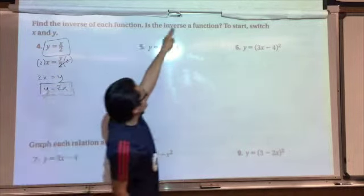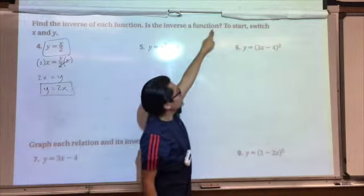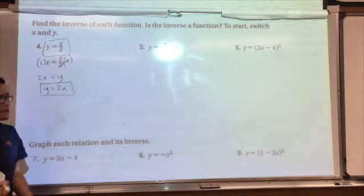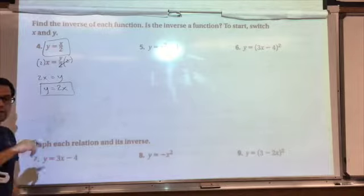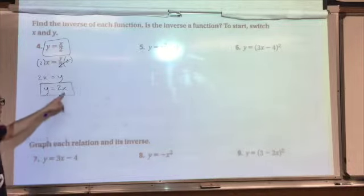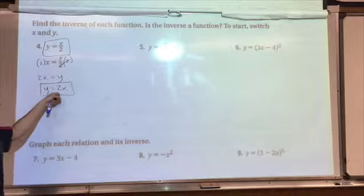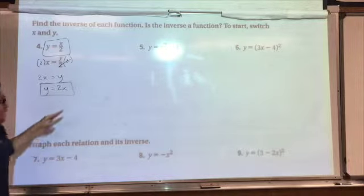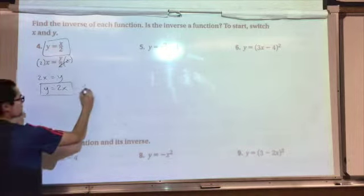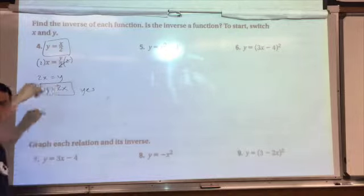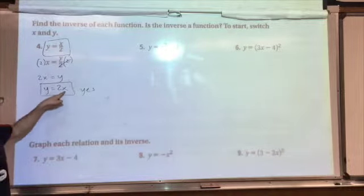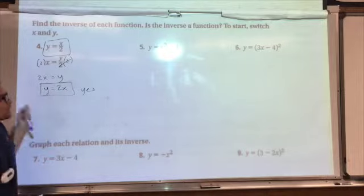The question at the end is: is the inverse a function? Think back to the vertical line test, or think back to the rule that each input must have exactly only one output. So is this a function? If you think about its graph, it's going to be a line with a slope of 2. So yes, it will be a function because it will pass the vertical line test — for every x that you substitute in, you only get one y out.